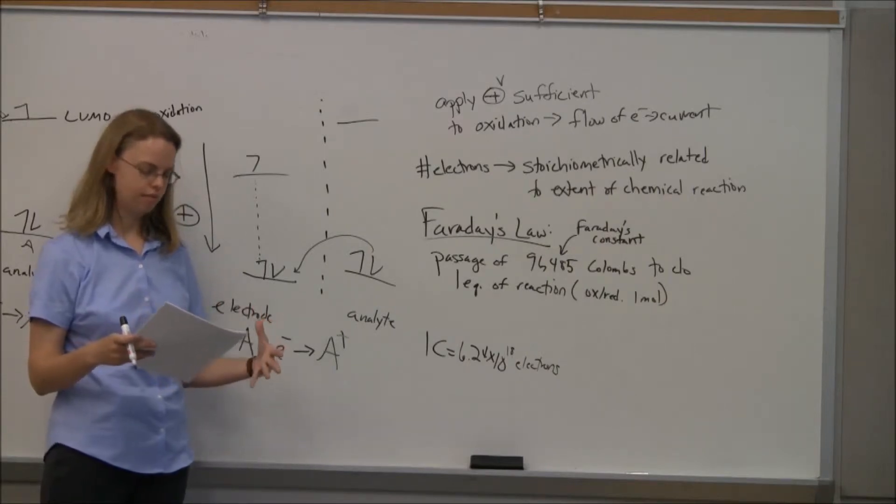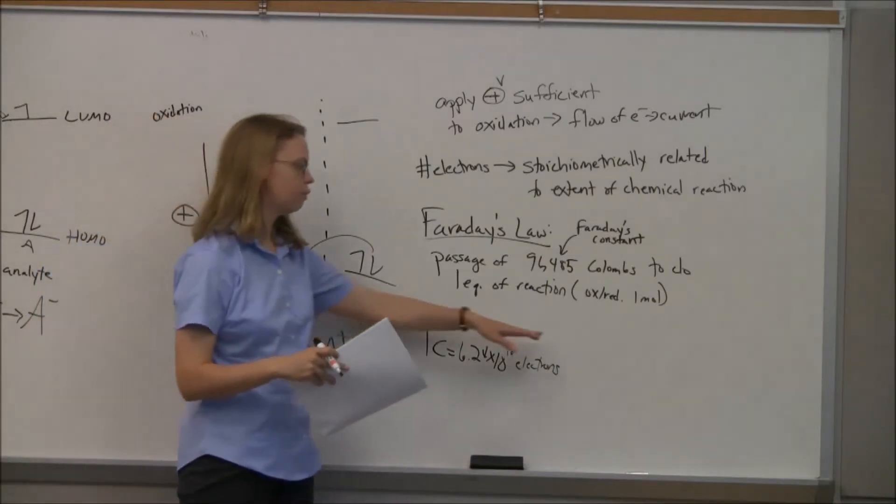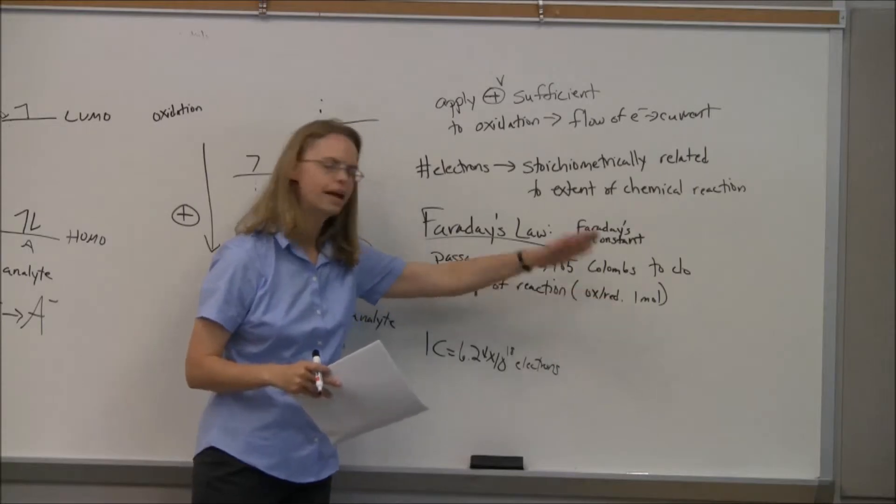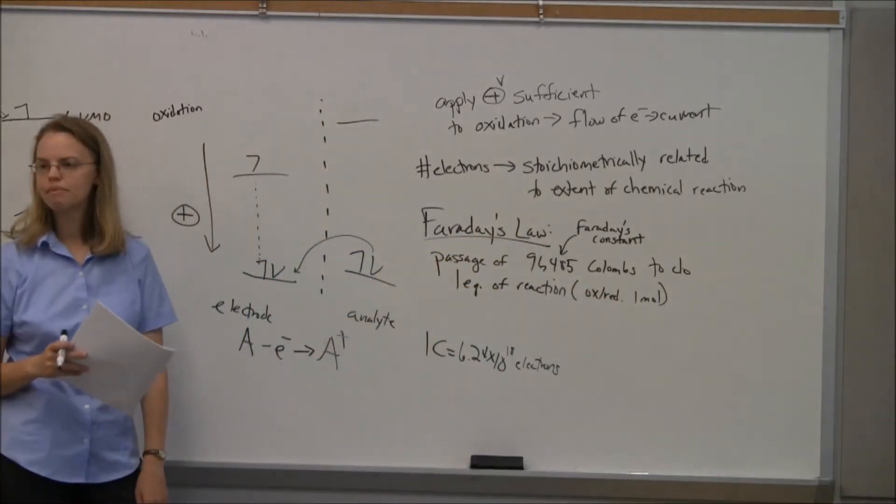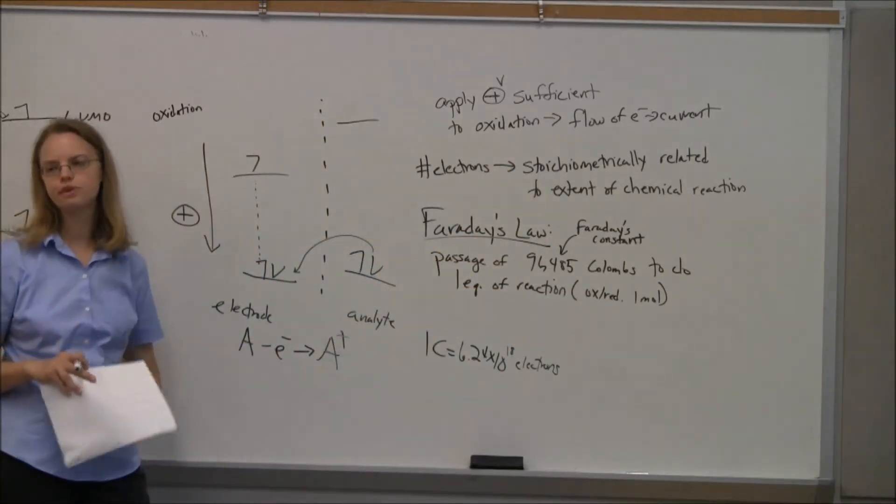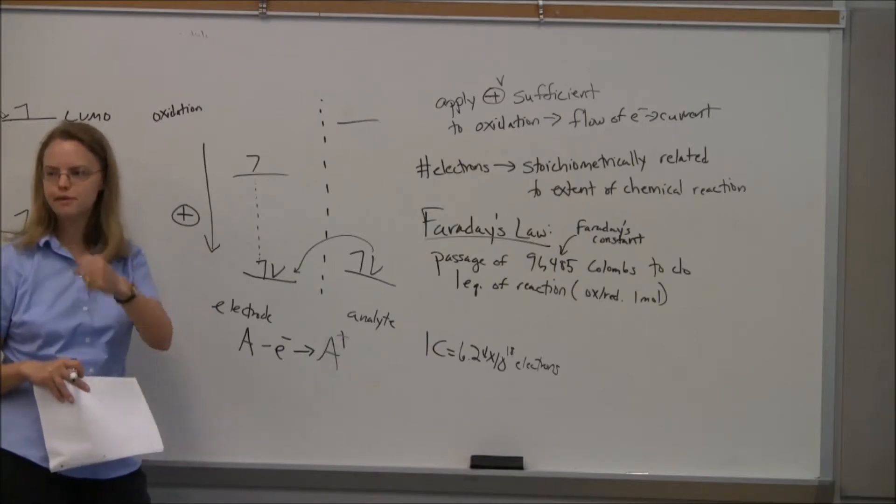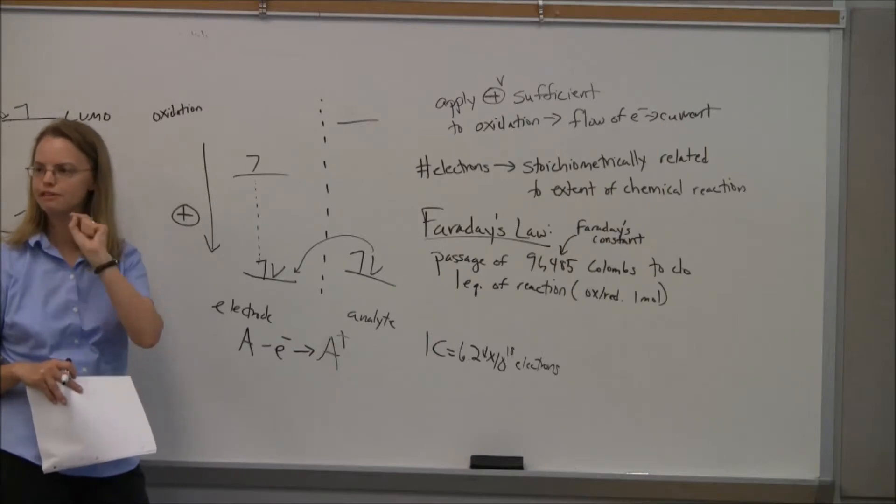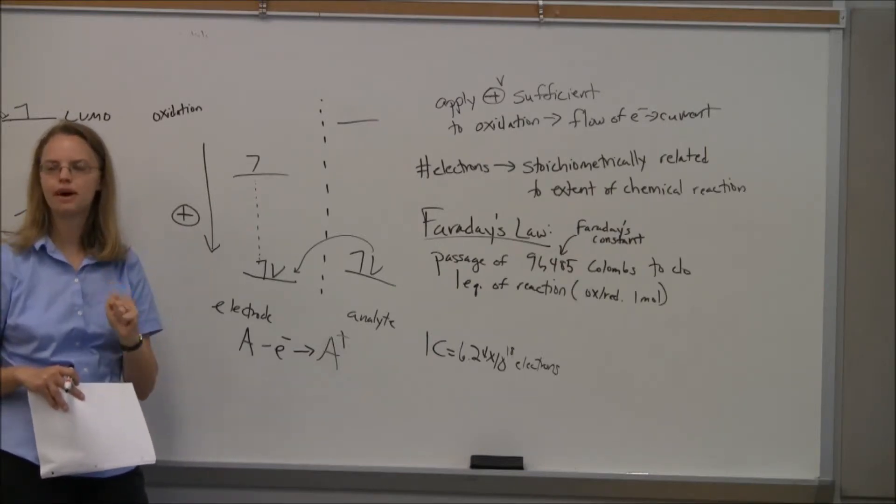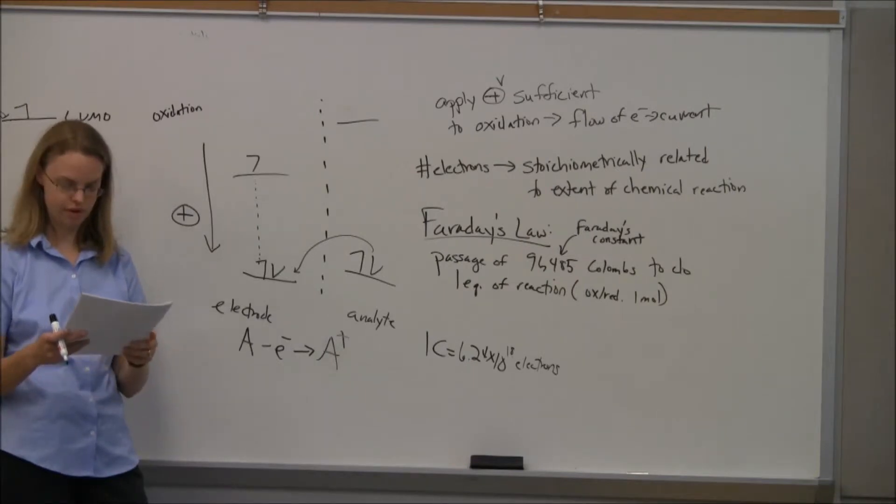So when we start to get to more equations, you'll see a lot of them have an N and an F in them. That comes from Faraday's law and Faraday's constant. So we'll get one mole either consumed or made with one electron. So I don't want to hear you equivocate on electrochemistry being quantitative. It is. The amount of current you get depends on the amount of reaction you did.